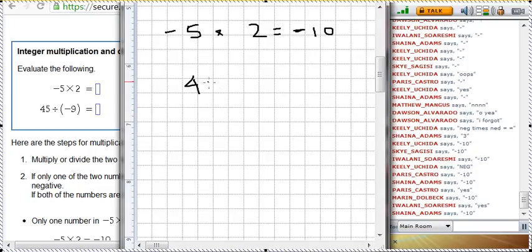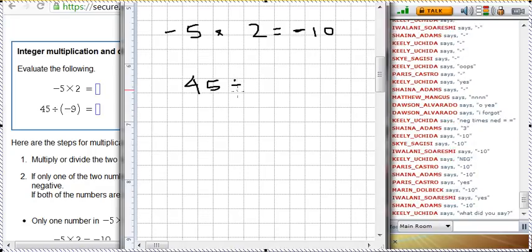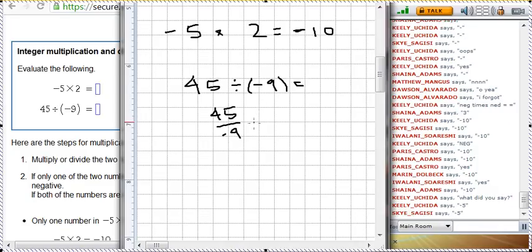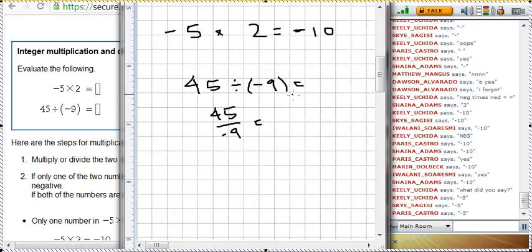Let's do this one. 45 divided by negative 9. And I suppose that another way you could write that is 45 over negative 9. Same thing. First of all, I know that you folks know the answer, but I'm going to go through it step by step.